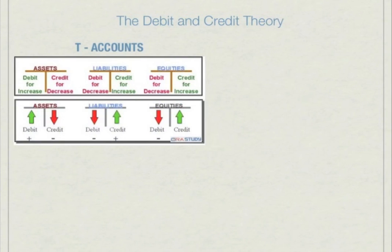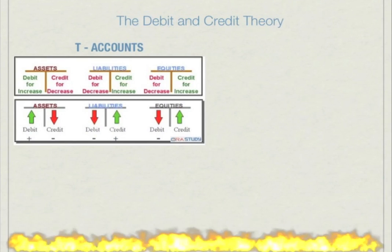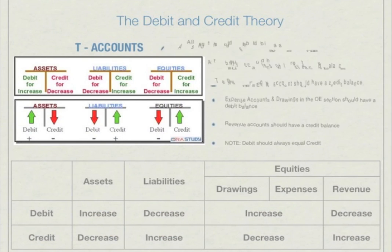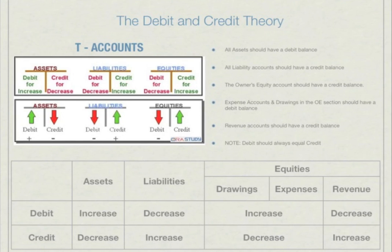One of the most important key concepts in accounting is the debit and credit theory. On the left of the screen, we have three general T-accounts — assets, liabilities, and equities — representing the individual accounts in each of the sections. The first thing you need to understand is that in accounting, debit means the left-hand side, and credit means the right-hand side, so in each account there is a debit and a credit side.